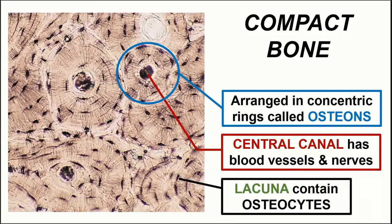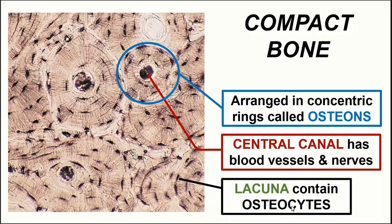In the center of each osteon is an unsurprisingly named structure called the central canal, which contains blood vessels and nerves. These blood vessels bring nourishment to the bone cells located in little cavities within the osteons. These cavity-like structures with thin, delicate branch-like structures coming off of them are called lacunae — the same type of structure we see in cartilage. Because this is bone, the cell type residing in the lacunae is called osteocytes, which are the primary cell of bone tissue.